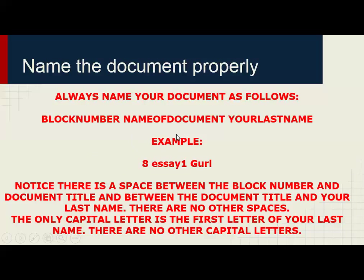There are three parts to the document name. The first is the block number — if you're in the first block, number one; second block, number two, etc. Then the name of the document, which is a name I have given you and should also be listed on the Fusion page on the assignment. And then your last name. With instances where I have two people with the same last name, you add your first initial. For example, if I was in the eighth block, the assignment name is Essay 1, and the student is Hugo Girl — Girl being the last name — it would look like that.